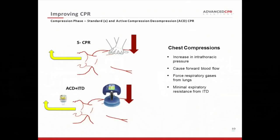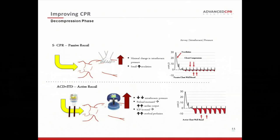Comparing standard CPR to active compression decompression CPR with the impedance threshold device — ACD-CPR — during the compression phase, the physiology is similar: pressure in the chest goes up, the heart gets squished, blood goes out to the brain, and air flows out of the lungs with minimal impedance from the ITD. However, during the recoil phase there is quite a difference. With standard CPR, there is passive recoil, a tiny vacuum develops pulling some blood back into the heart and a little air into the lungs — resulting in very little circulation. But with ACD-CPR and the ITD, you create a vacuum of 8 to 12 centimeters of water inside the thorax, which enhances circulation back to the heart, refills the heart, lowers intracranial pressure, and results in a significant improvement in circulation.